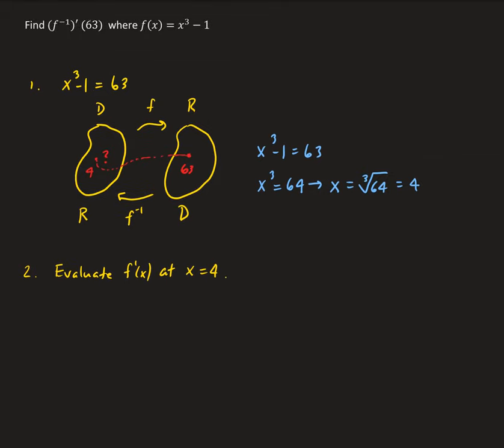The derivative for the function we're given is just using the power rule. It's going to be 3x squared. So f prime of 4 is going to be 3 times 4 squared, and that's going to give us the value of 48.